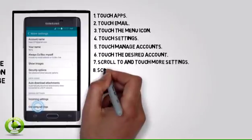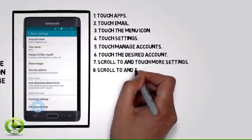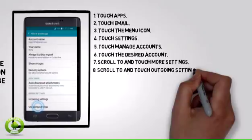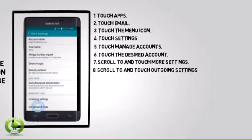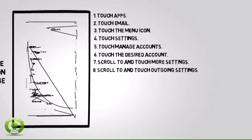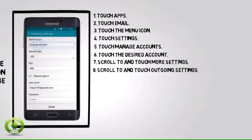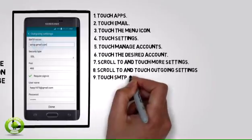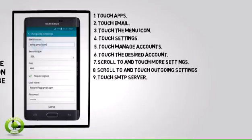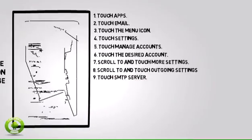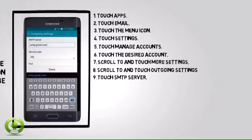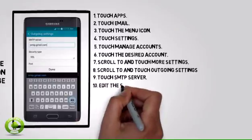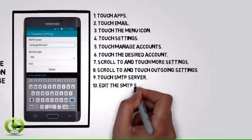8. The most common settings to change are the outgoing settings. Scroll to and touch outgoing settings. 9. Touch SMTP server. 10. Edit the SMTP server name.